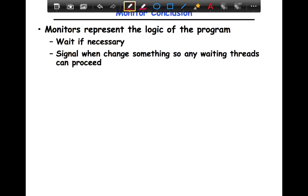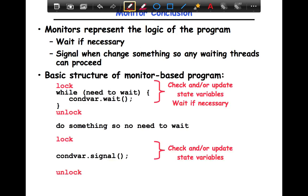So in conclusion, monitors represent the logic of the program. They wait if necessary. Signal when the condition changes so that any waiting threads waiting on the condition can proceed. The basic structure of a monitor program is you have a lock-unlock region and within that you have a while loop where you check the condition that you need to wait on and if so, wait on the condition. And then someone else who also holds the lock signals and they subsequently unlock.